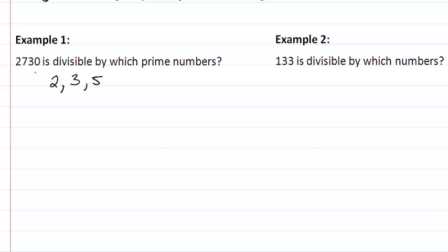Well, it ends in 0, so that means it is divisible by 2. 0 also means it is divisible by 5. So now we are checking for 3, so we are looking to see 2 plus 7 plus 3 plus 0, that is going to give us 12.